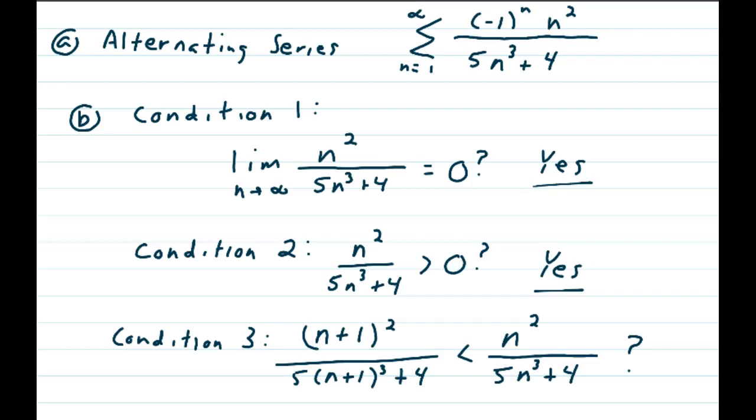Condition 1 being, is the limit as n approaches infinity of n squared over 5n cubed plus 4 equal to 0? And that's a yes.